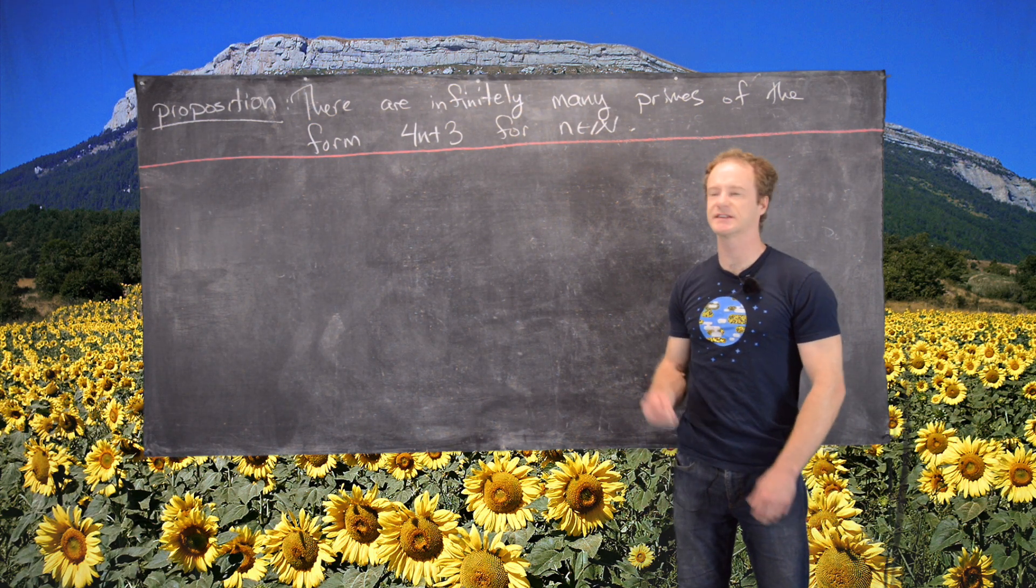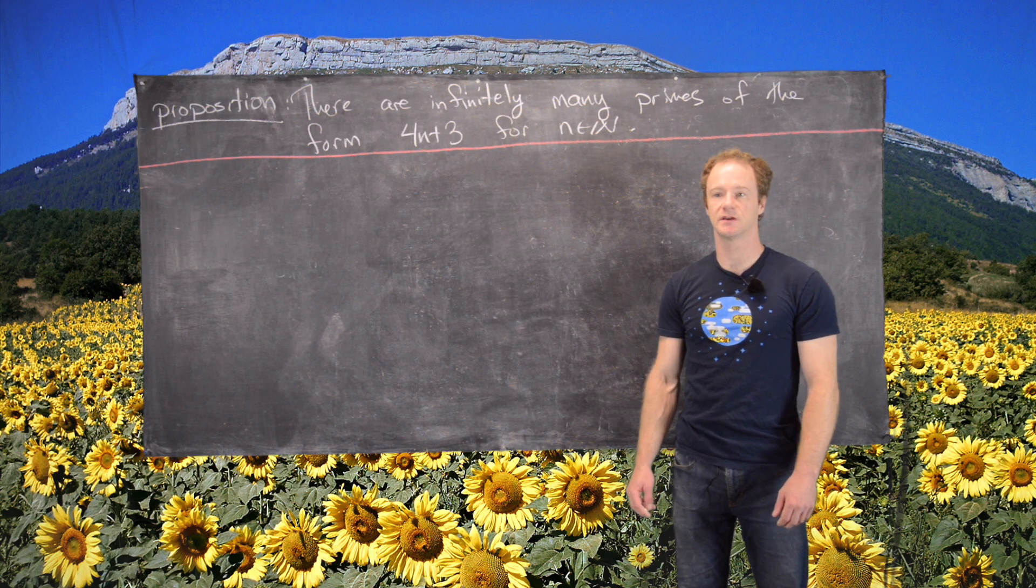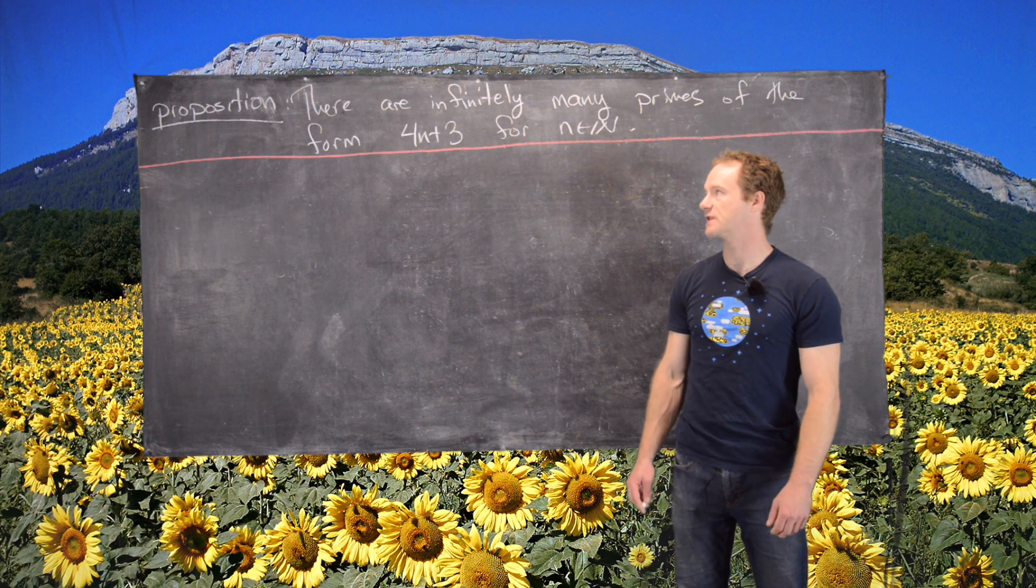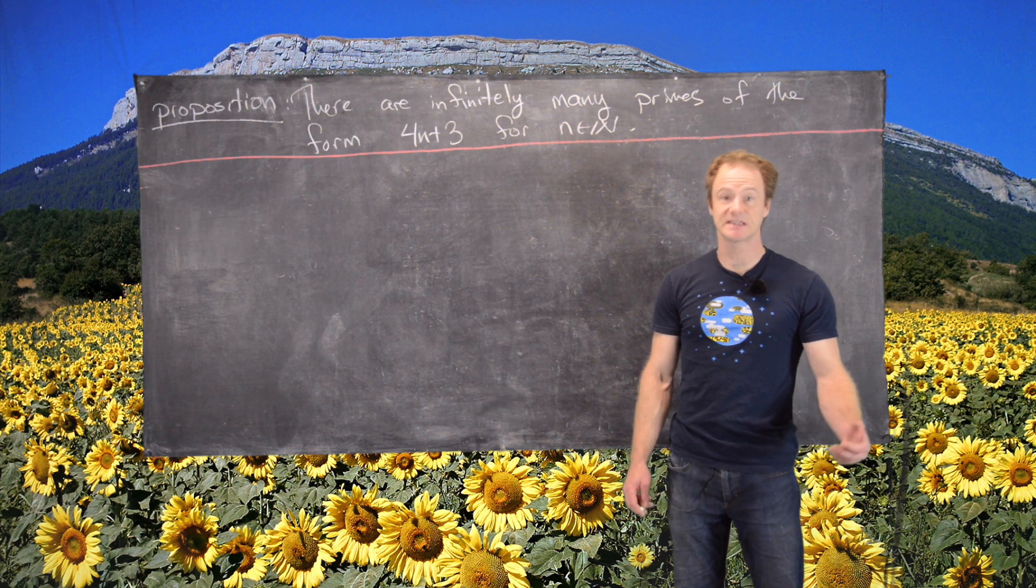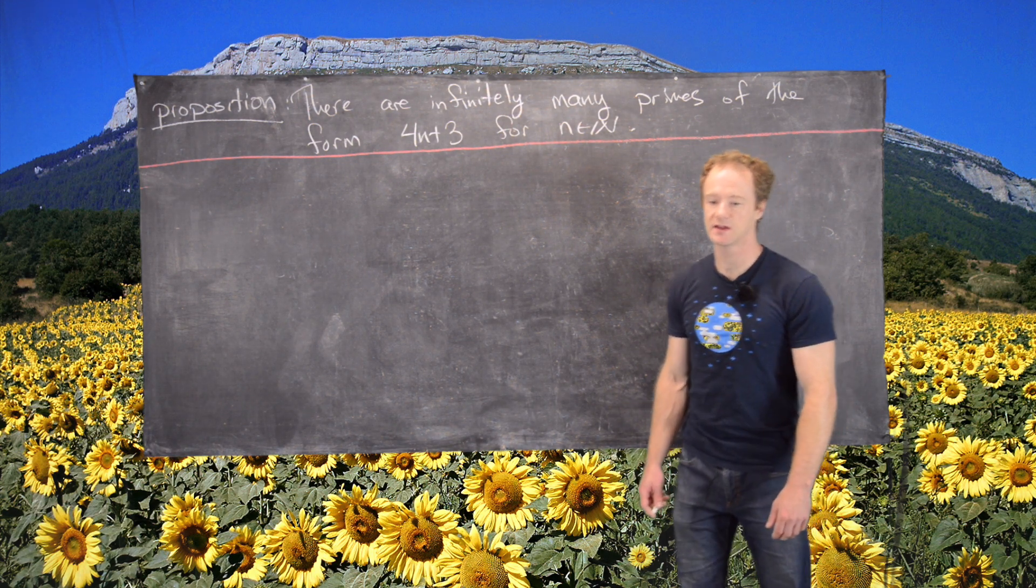The proof of this can serve as a model for the proof of several different similar results, like there are infinitely many primes of the form 6n plus 5, for instance. So let's get into the proof.